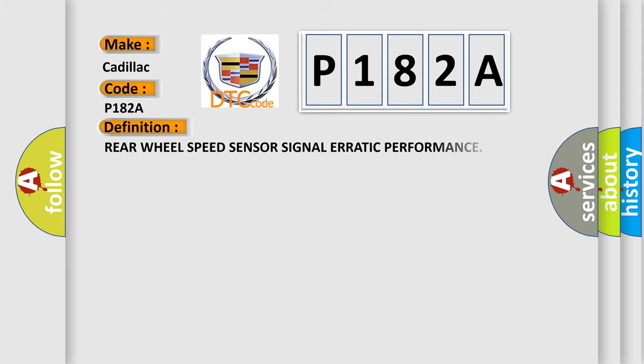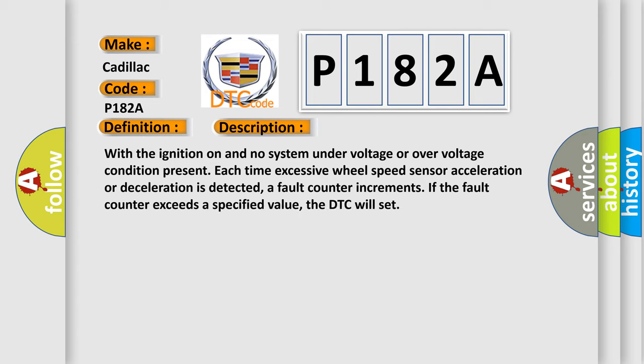The basic definition is rear wheel speed sensor signal erratic performance. And now this is a short description of this DTC code. With the ignition on and no system under voltage or over voltage condition present, each time excessive wheel speed sensor acceleration or deceleration is detected, a fault counter increments. If the fault counter exceeds a specified value, the DTC will set.